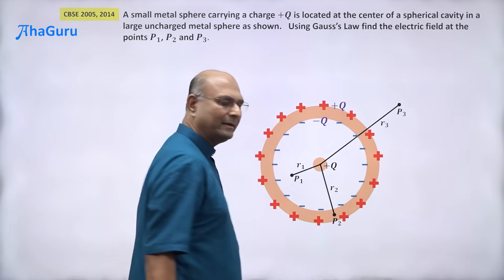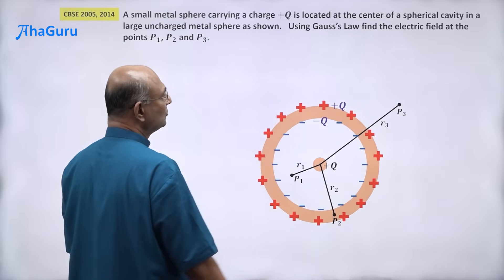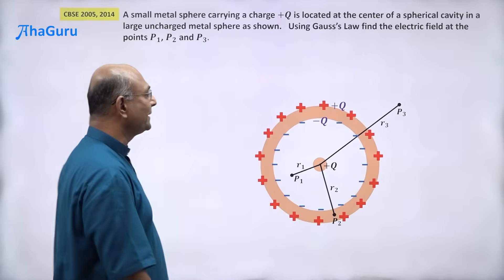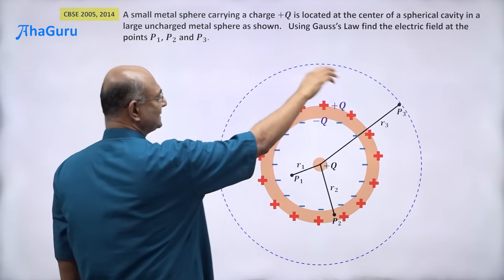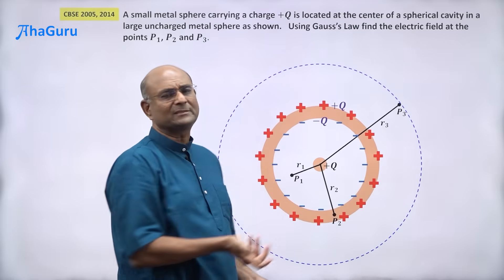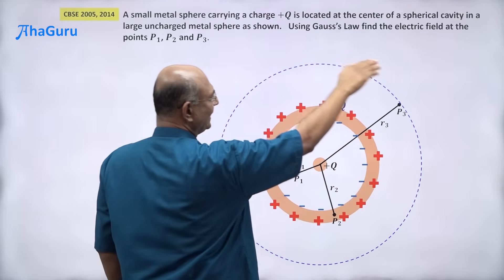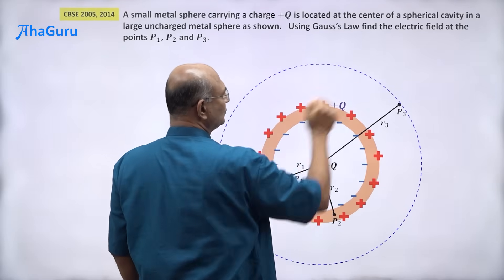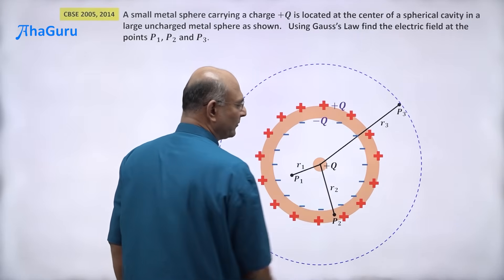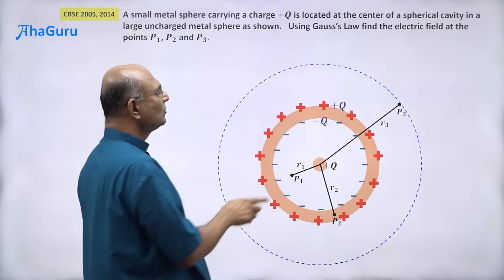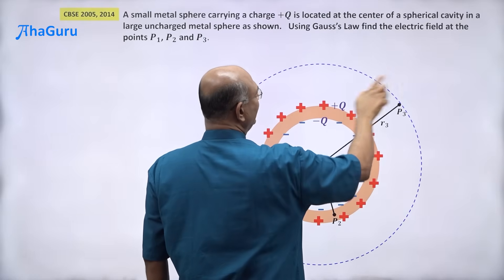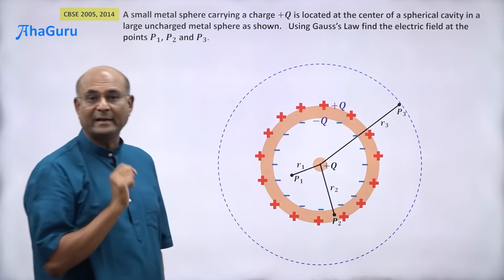I'm going to start by looking at the electric field at P3. I will draw a Gaussian surface passing through P3 — a spherical Gaussian surface, because everything is spherically symmetric. The center of the Gaussian surface is at the center, the radius is r3. By spherical symmetry, if the electric field here is E everywhere it will be E radially outwards.